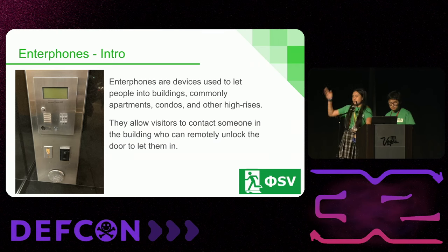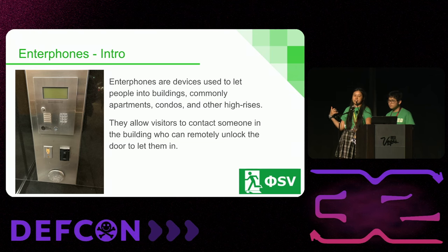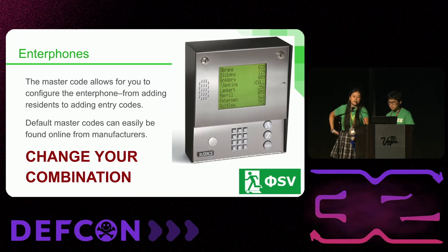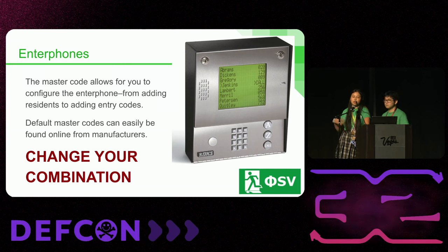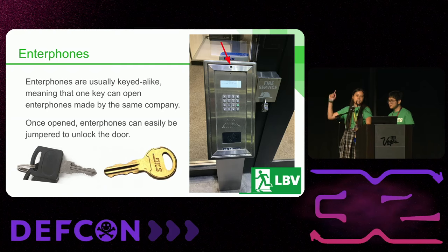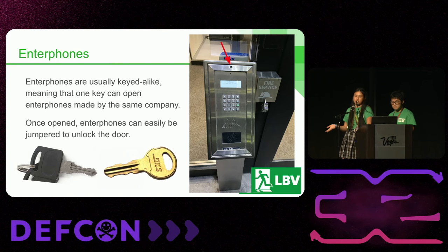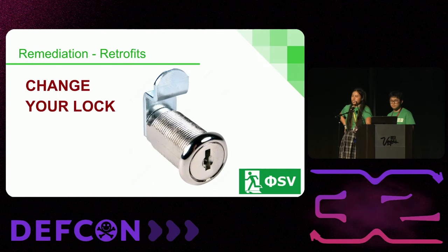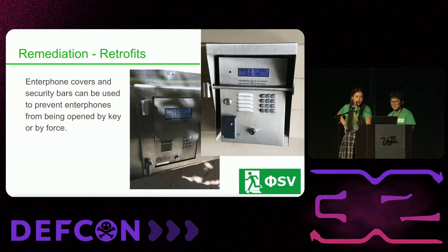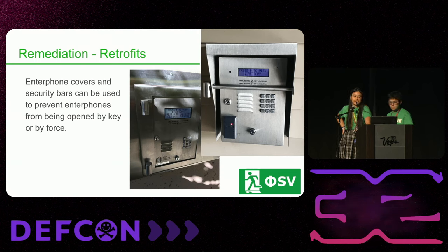Enter phones are used to let people into apartments and high-rises. You can call up using that enter phone and the resident can push a button on their phone to allow you access. There's a master code from the factory that allows the building owner to add entry codes and residents — you can find these online from manufacturers, so change your combination! Further, these enter phones use keys, and with those keys you're able to open all enter phones of the same brand and access the electronics. You can also change your lock — there are security bars and enter phone covers to prevent people from force-opening it or accessing the circuitry inside.